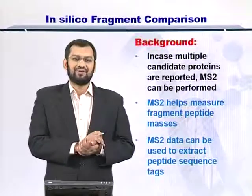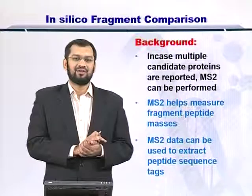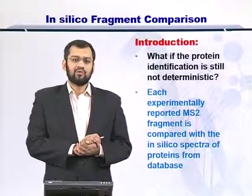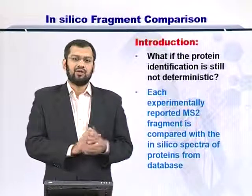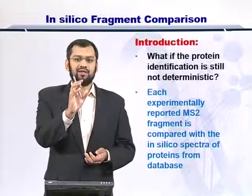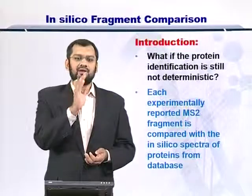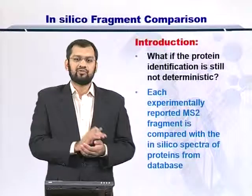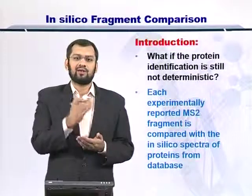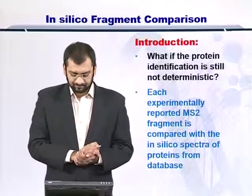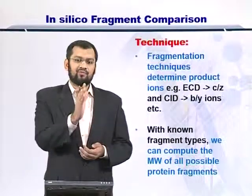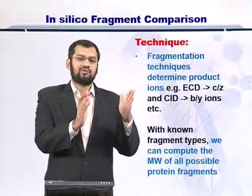But what if you are still not sure which protein is in the sample? Then there is a third step. In that step, you take the MS2 spectrum — the entire peak list — and you take one protein from the database at a time and create the theoretical spectrum from it. If you know which technique you are going to use to fragment this protein, you can calculate the possible fragment ion masses. Once you have done that, you can move on to comparing these fragments, which we call the in silico fragments, with the in vitro or experimental fragments.